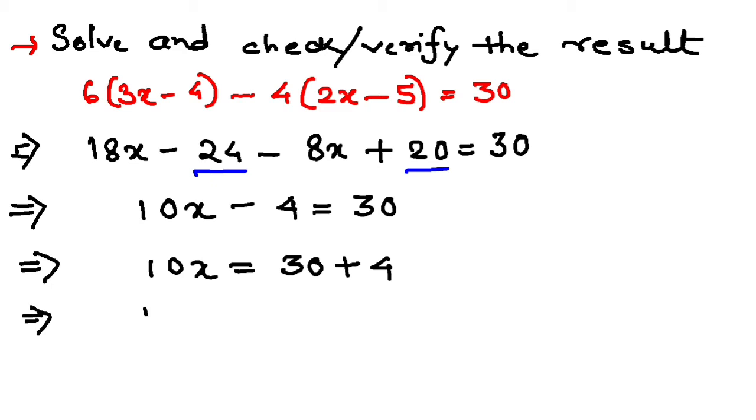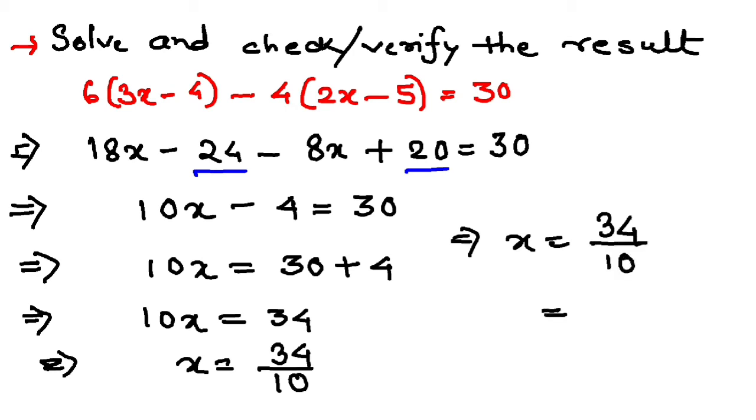So I have 10x equal to 34. So x equals 34 by 10. In lowest form, that is 17 by 5. So 17 by 5 is my result, that means the value of x.